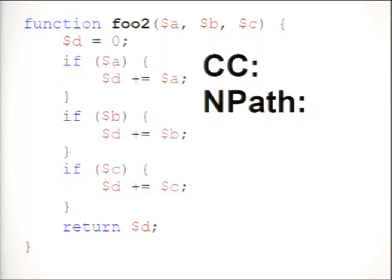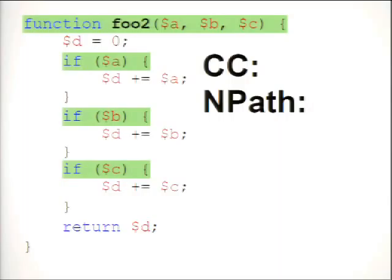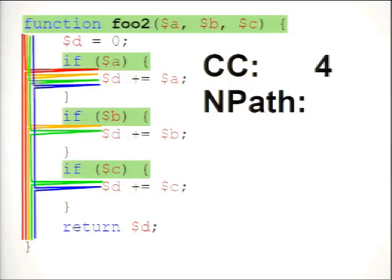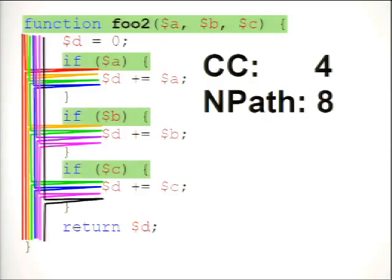Let's take a slightly different example — a function that adds three numbers together conditionally. Cyclomatic complexity is four. But counting unique paths — no ifs, the first only, first and second, first and second and third, first and third, and so on — we have eight unique paths. In general, your upper limit on n-path complexity is 2 raised to the cyclomatic complexity minus one. They're related but measure different things.